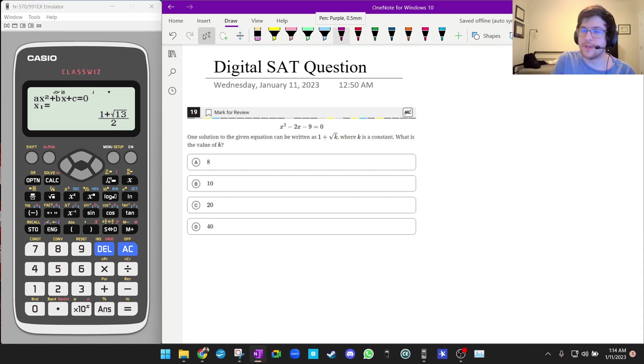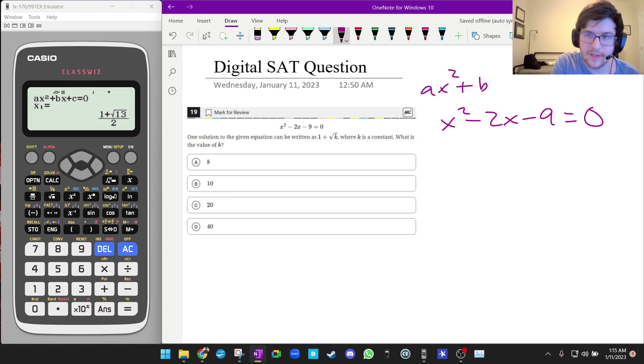Pause this video and see if you can do it. All right, this one looks pretty nice. It's x² - 2x - 9 = 0. Again, we're going to hold up ax² + bx + c = 0. We see that A is 1, B is -2, and C is -9.